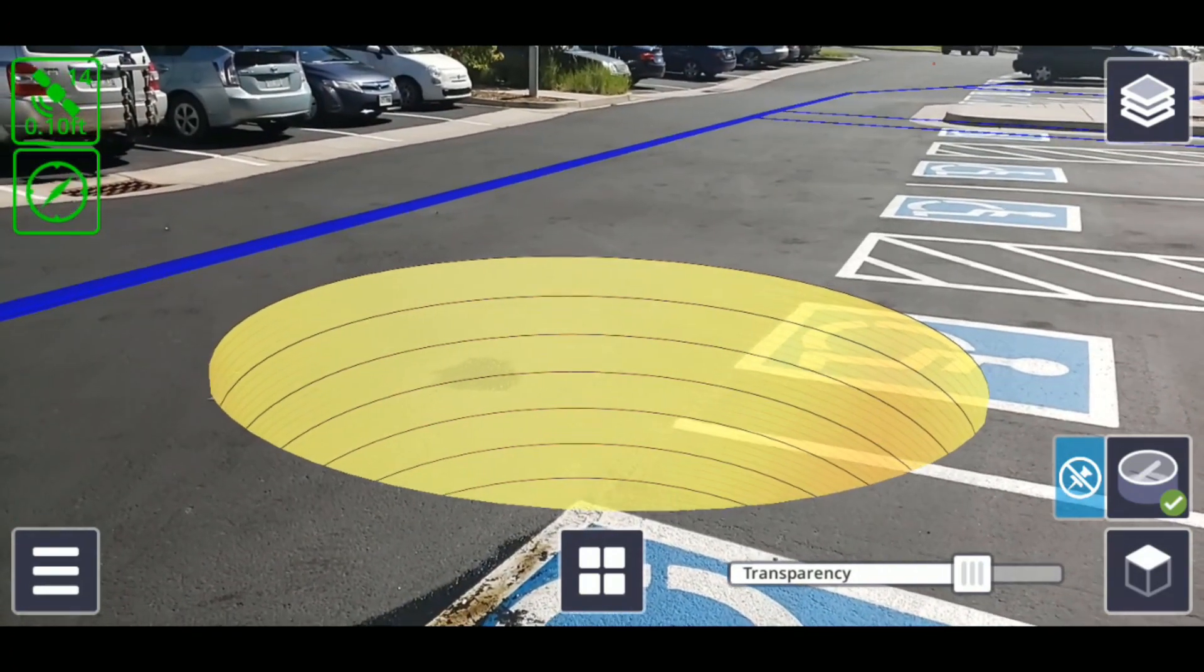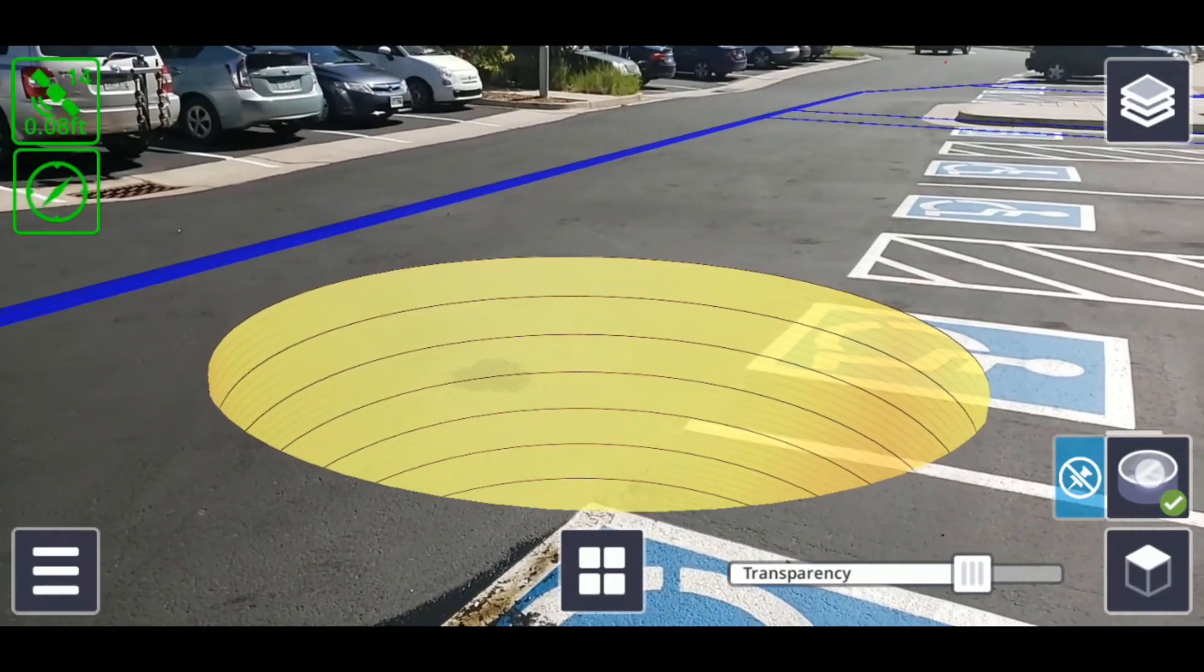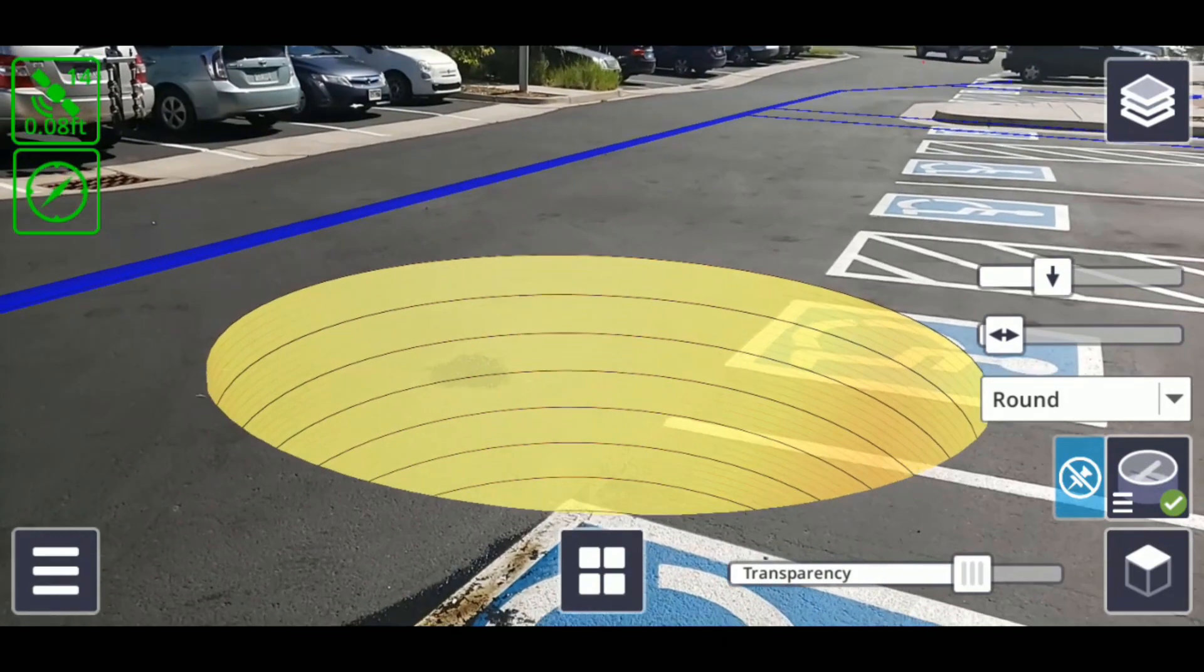To access more options, tap and hold on the pit view icon on the right side of the screen. This opens up additional options.